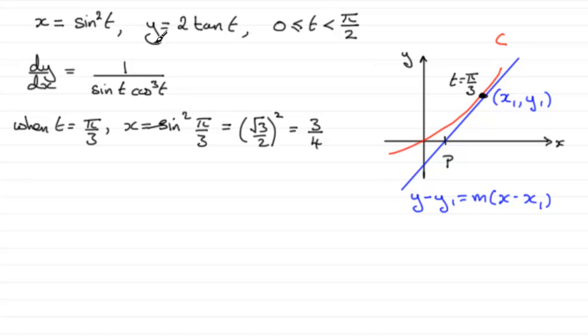We also need to get our y₁ value, so we can say that when T equals π/3, y is going to equal 2 tan(π/3) radians, the tan of 60 degrees. And so tan of 60 degrees or π/3 radians is √3 times it with the 2 and you end up with exactly 2√3.